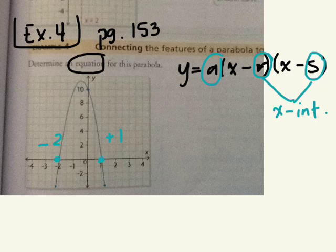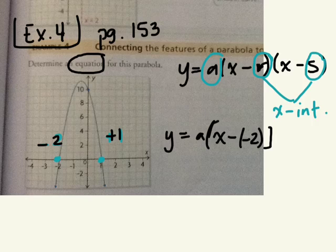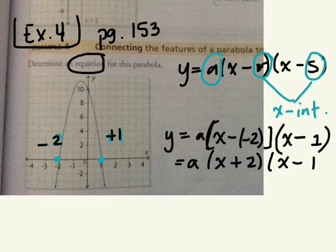How would I plug that into my equation? Y equals a times x minus r. R is negative 2, and x minus s. S is 1.